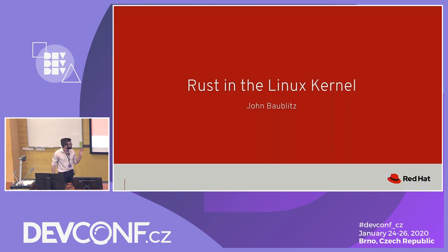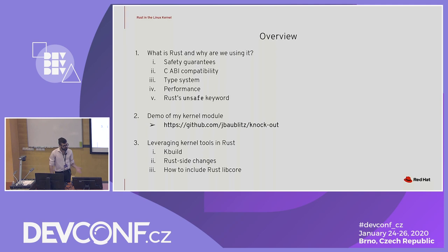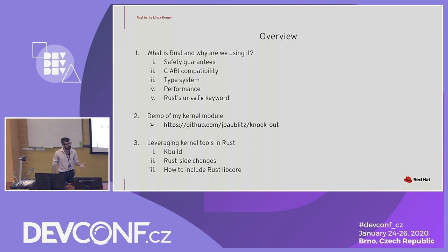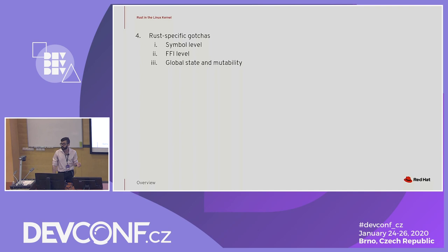Rust is going to give you a lot of benefits as a low level language, and it doesn't work quite out of the box. We're going to go over some of the gotchas that come about when you're trying to make this happen. We'll first talk about what Rust is and why we're using it, then do a demo of my kernel module, talk about leveraging existing kernel tools for building Rust, and last, we'll talk about Rust-specific gotchas — things you might not expect to bump into at a lower level and how we can get around that.